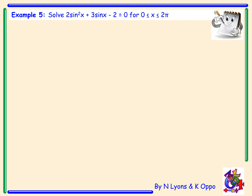Example 5. This is another quadratic trig equation to solve in radians: 2sin²x + 3sin x − 2 = 0. We can write it in terms of x² and x to help us factorise. It factorises to (2x − 1)(x + 2).